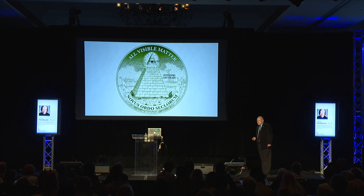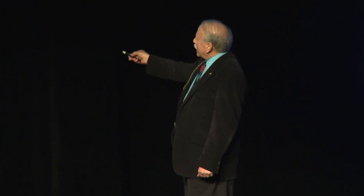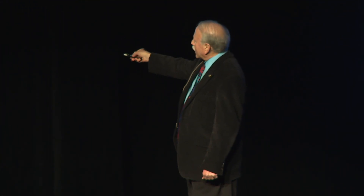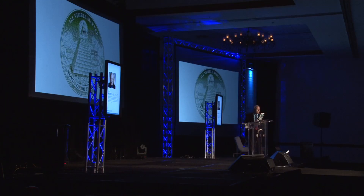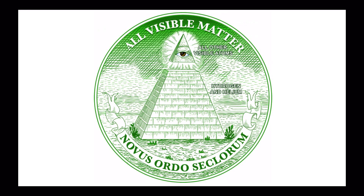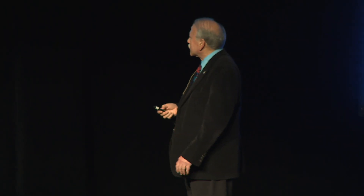We use this picture from the back of the dollar bill, or the back of the Great Seal of the United States, to represent that. The big part at the bottom — about 98% — is just hydrogen and helium, which came out of the Big Bang. Almost all the helium was actually made in the first few minutes.